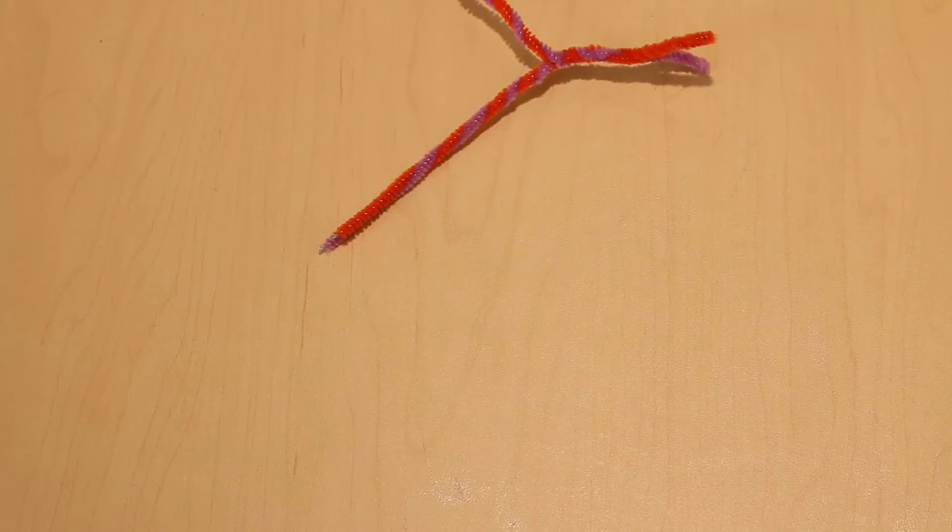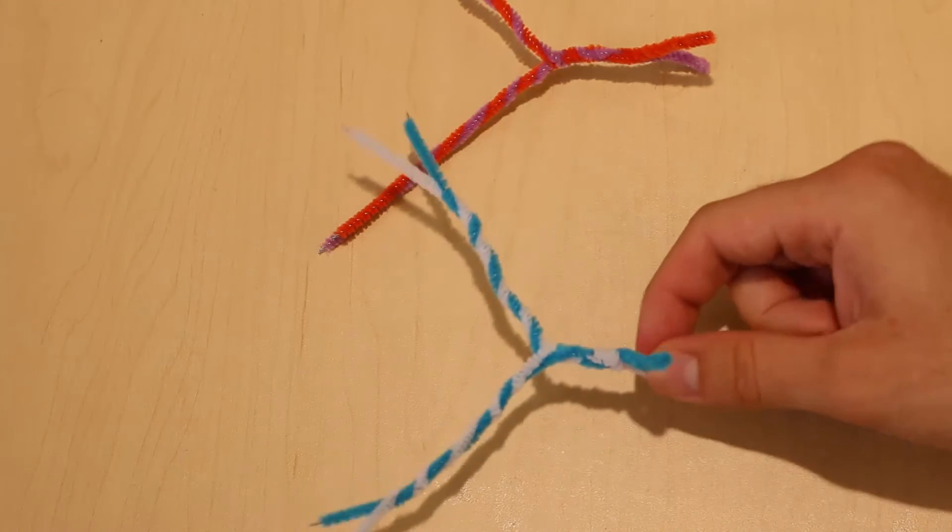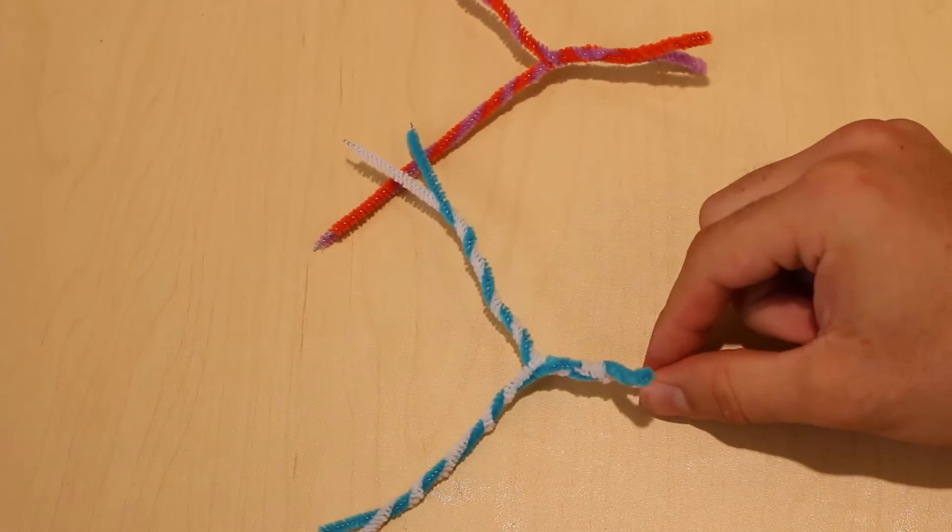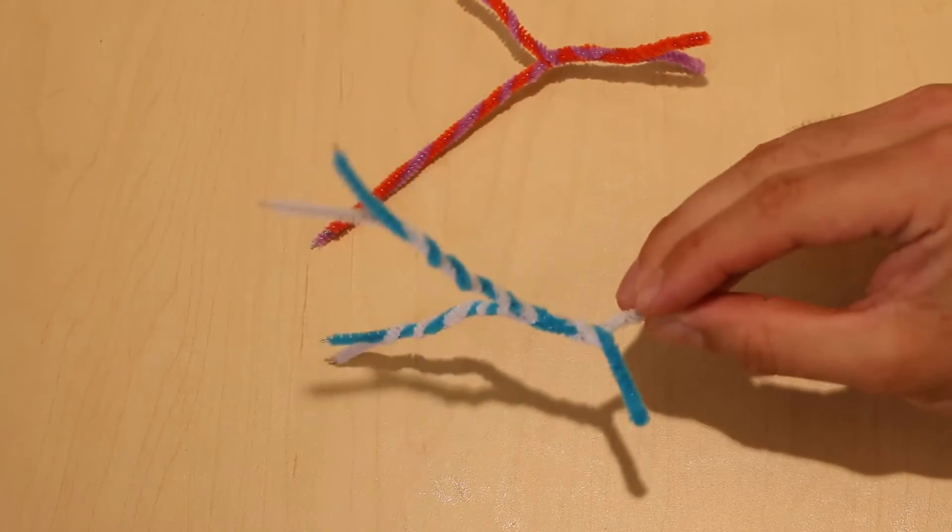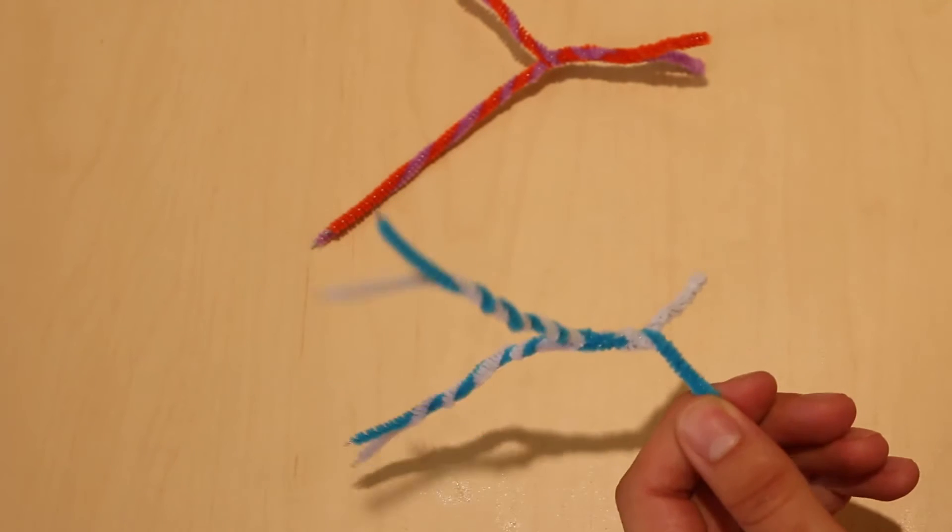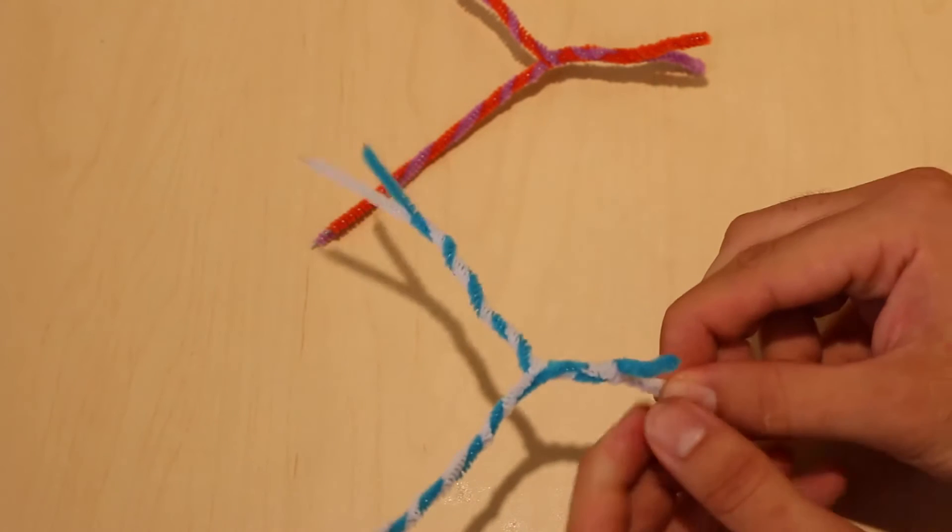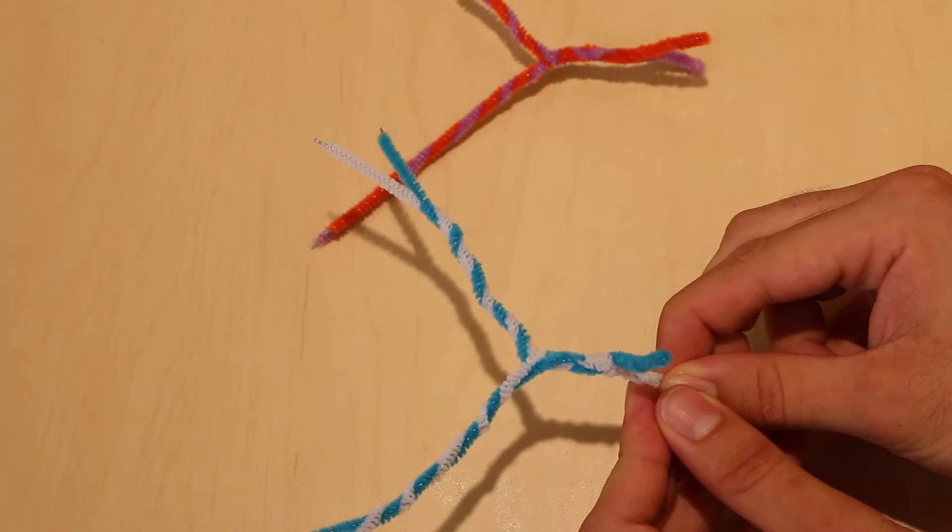Skipping the middle trunk for a moment, we are going to show that the same thing happens with C8 and T1. Here we can see C8 in white is superior to T1 in blue. And then if we rotate it, we can see an anterior and a posterior division.